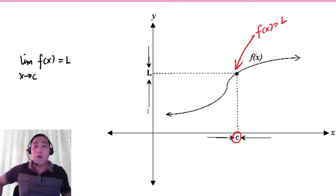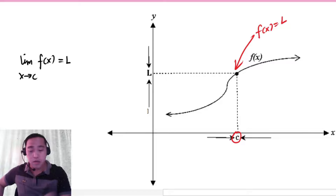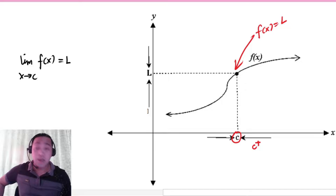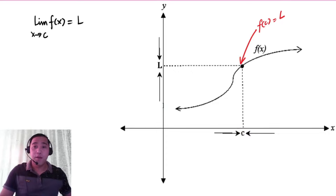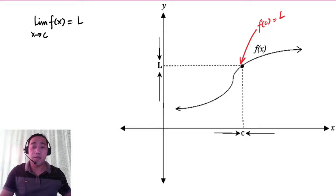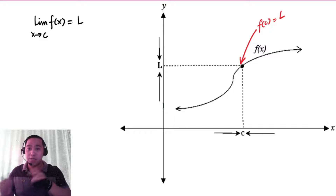But it cares about what is the limit of the function when x approaches C from the right. Take note that we are only considering values of x which are infinitesimally closer to C. When I say infinitesimal value, these are very small numbers that are closer to C.